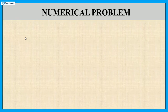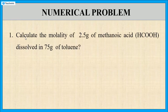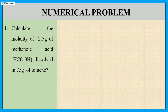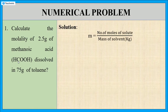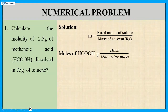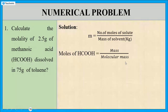Let us solve some problems. First, calculate the molality of 2.5 grams of methanoic acid dissolved in 75 grams of toluene. Here the solute is methanoic acid and the solvent is toluene. Write down the formula: molality m equals number of moles of methanoic acid divided by mass of solvent. First, calculate the number of moles of methanoic acid using: number of moles equals mass of methanoic acid divided by molecular mass of methanoic acid.